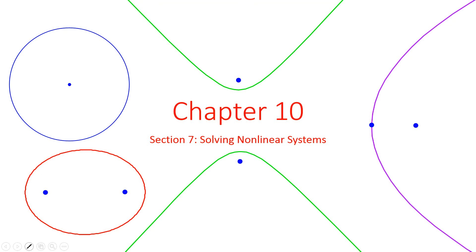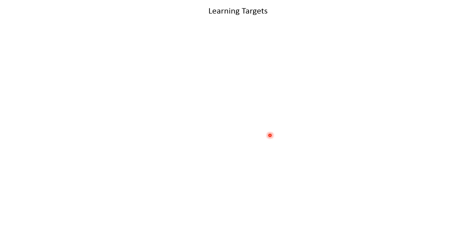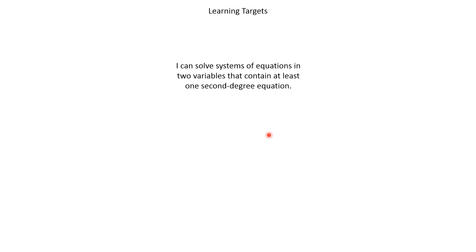Good morning and welcome back to the last section, Chapter 10. In this section, we're going to be solving nonlinear systems — a combination of our conic sections — and we're going to see where they intersect. We only have one learning target: I can solve systems of equations in two variables that contain at least one second-degree equation, so we'll have at least one x squared or y squared or both.